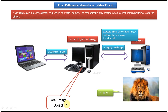So the virtual proxy will not create the real image object again and load the line image from the disk — it will avoid that first step. Instead, it will use the existing real image object and just call the display line image method. In this way we can avoid creating expensive objects again and again, so the real object is only created one time.